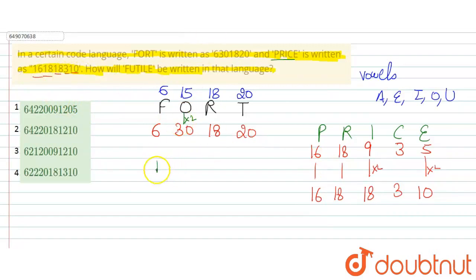So same logic follow. And you can see F, U, T, I, L, E. This code is given as F place value 6, U 21, T 20, I 9, L 12, and E 5.